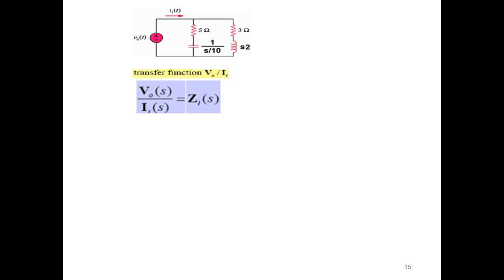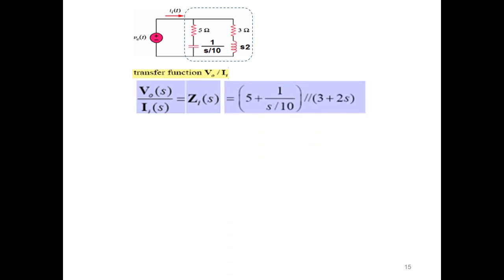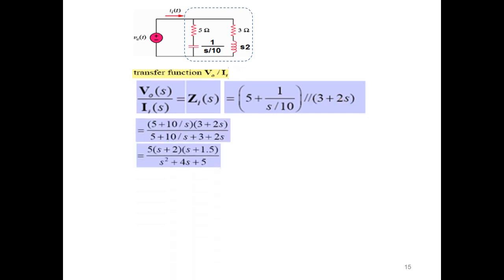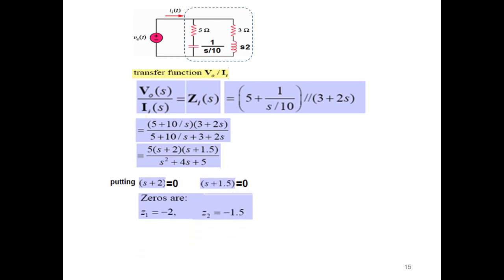The transfer function is the impedance of this circuit. We find the impedance of each branch: these two elements are in series, and those two are also in series. Then both branches are in parallel with each other, so we combine the series branch in parallel with the right branch.